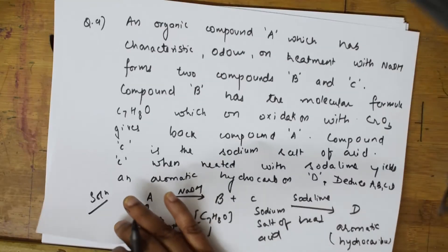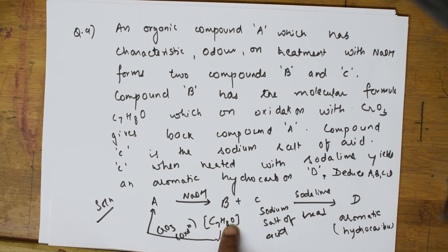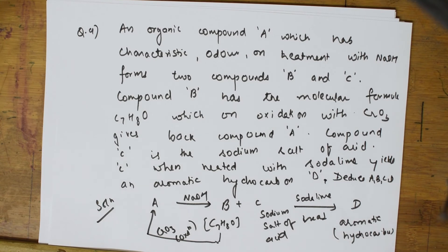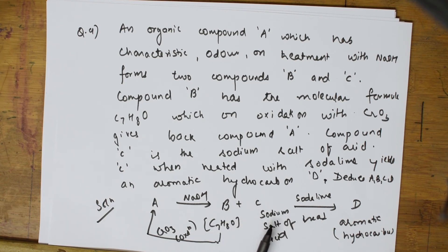There is no formula for A directly, but B has formula C7H8O. Compound A reacts with NaOH to give B and C. Concentrated NaOH (alkali) is used in Cannizzaro's reaction. In Cannizzaro's reaction the same compound undergoes disproportionation — one molecule gets oxidized to sodium salt of acid and another gets reduced to alcohol.